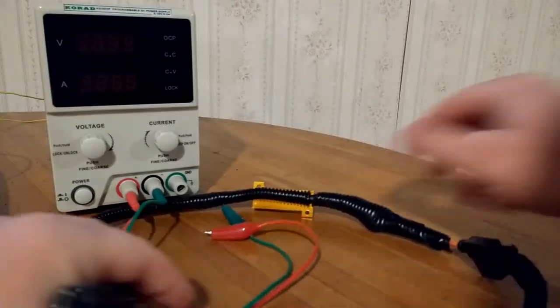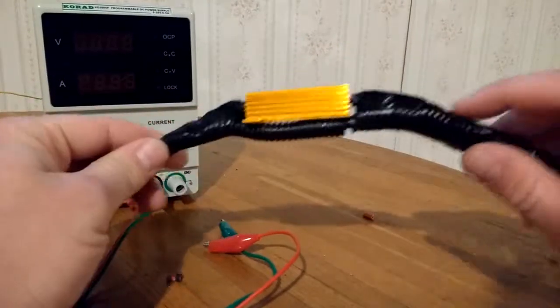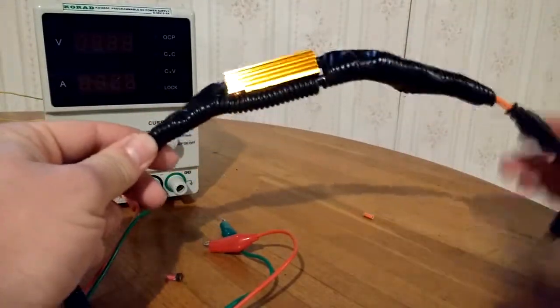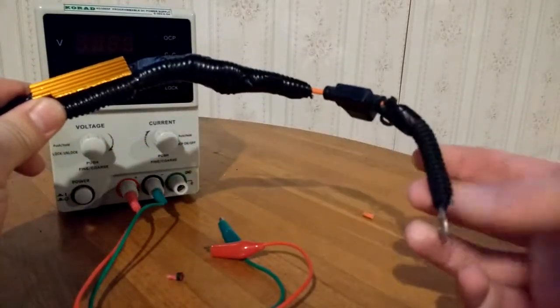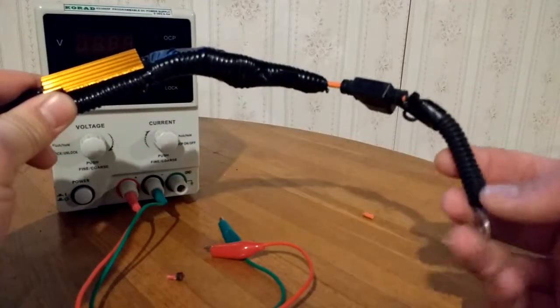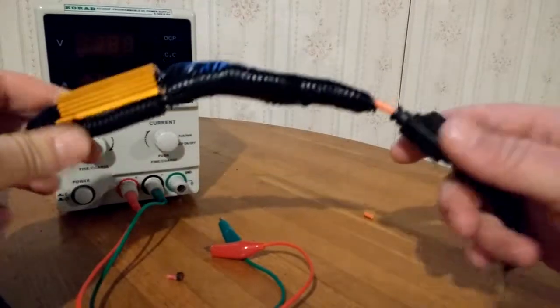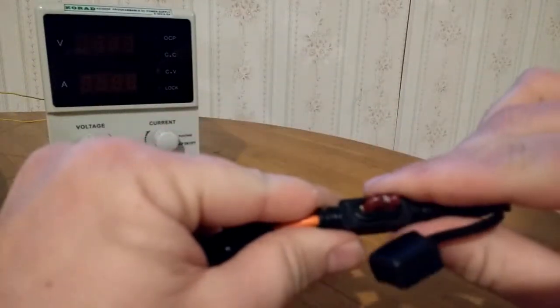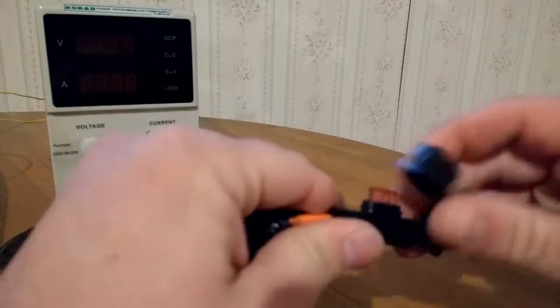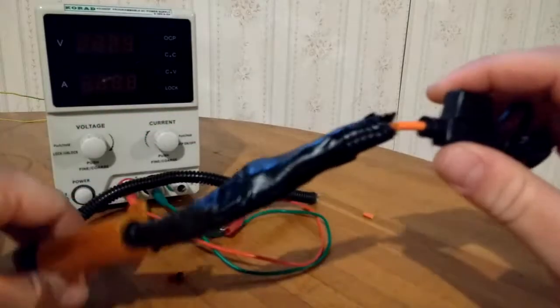I have the harness completed, got the diode in here underneath the split loom. Power is going to come in from the capacitor bank and from the alternator here. Got it at a 4 amp fuse right now, which might be a little bit small.